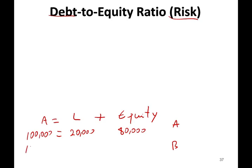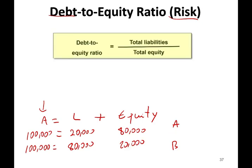Now let's look at another company with $100,000 in assets. They have liabilities of $80,000 and equity of $20,000. Notice both companies have assets of $100,000. Let's compute the debt to equity ratio. For company A, we take total debt of $20,000 divided by equity of $80,000. Twenty divided by 80 gives us 0.25. For company B, we take 80 divided by 20, and that gives us 4. So 0.25 for company A and 4 for company B.